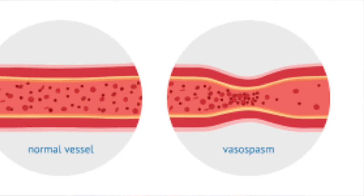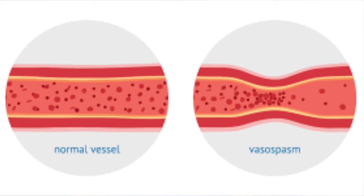What is the deadliest complication of aneurysm? It is vasospasm. Vasospasm means that spontaneously, within a period of 1 to 21 days of rupture of the aneurysm, the vessels become small and blood supply to the brain is stopped. This can also cause a major stroke due to occlusion of the vessels.